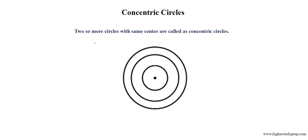Concentric circles: two or more circles with the same center are called concentric circles, for which the radii are different but the center is the same point.